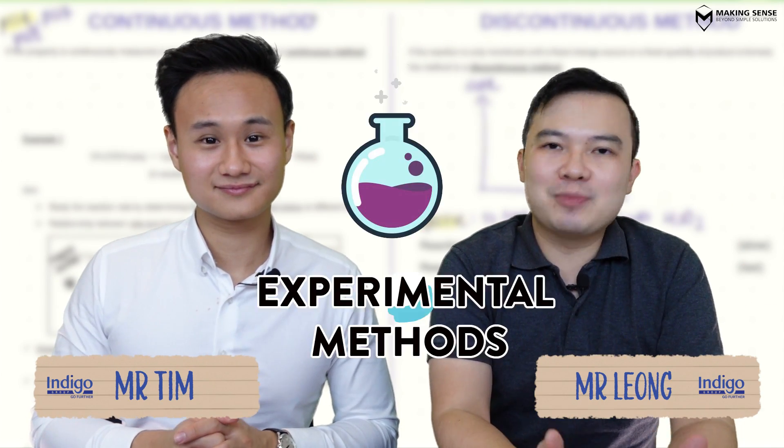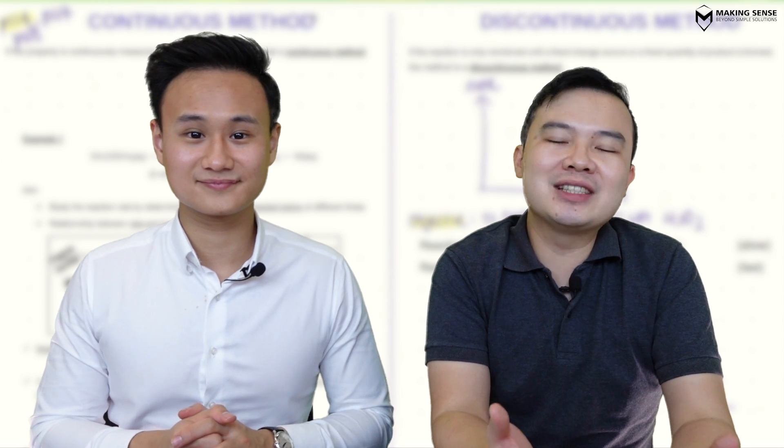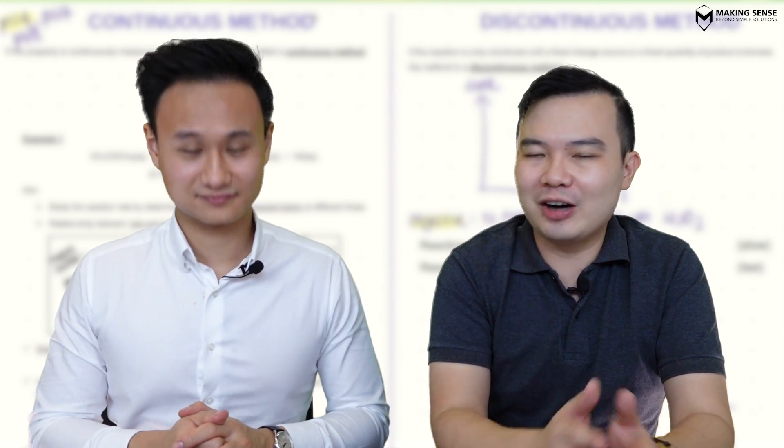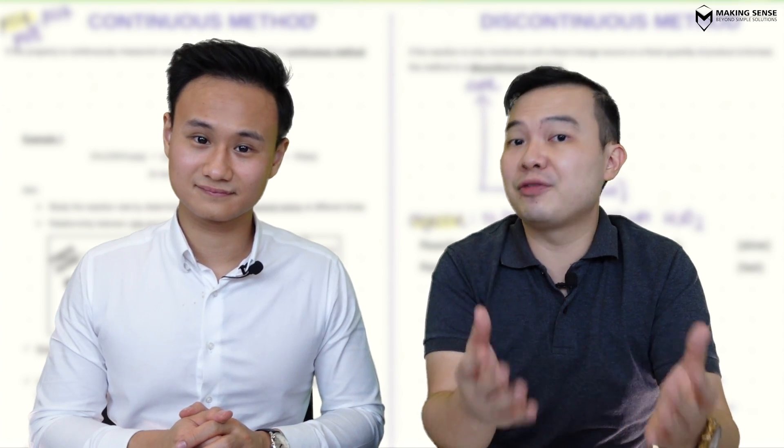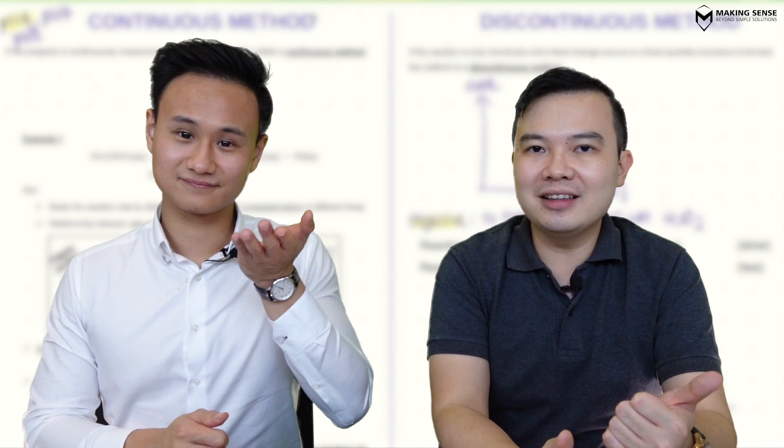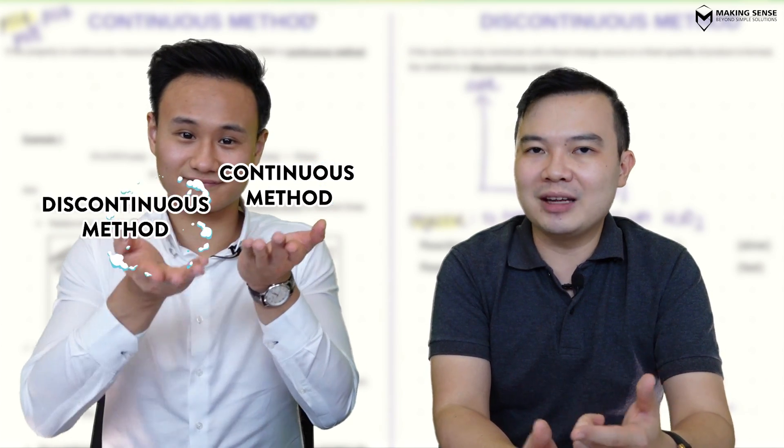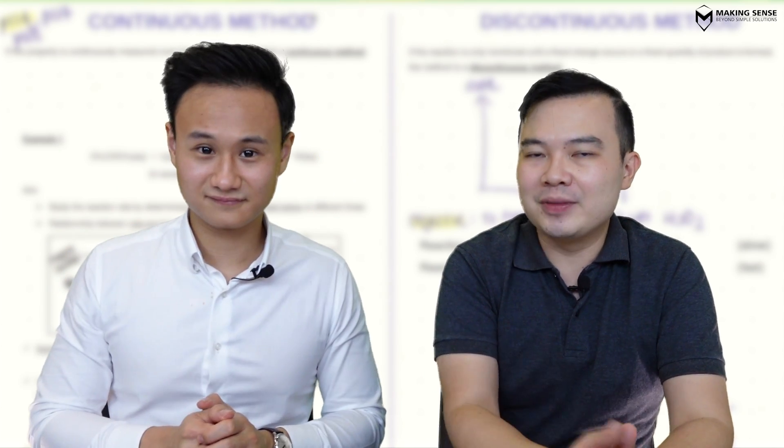Hi students, welcome back. In this video we're going to take a look at experimental methods, which is going to be very similar to what you see in practicals. All the experiments you've been doing in practical can be broadly classified into two different kinds of methods: first is the continuous method, the other one is the discontinuous method. We're going to run you through both of them.